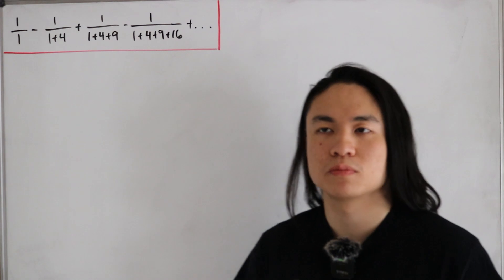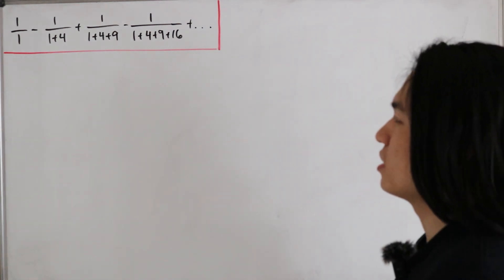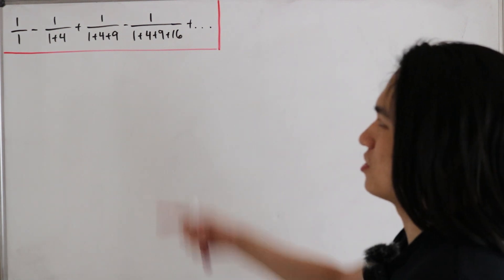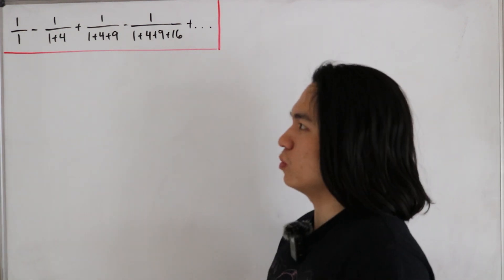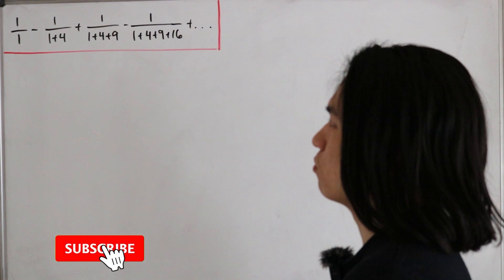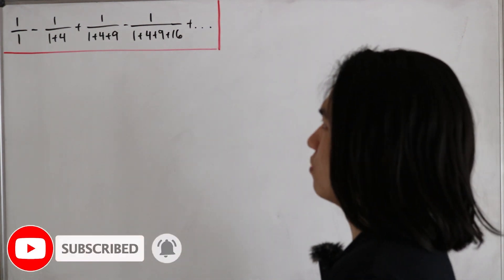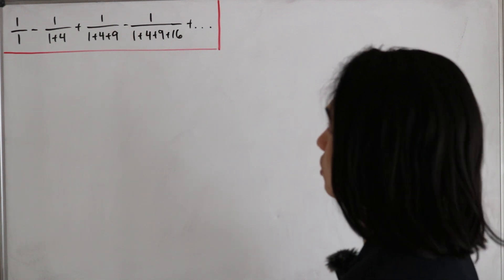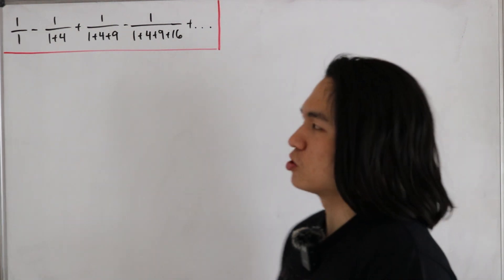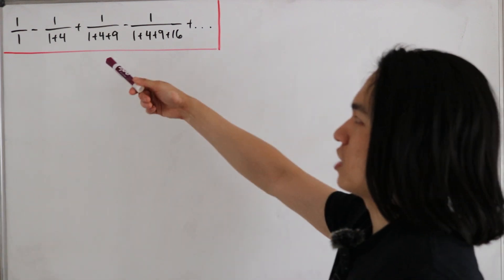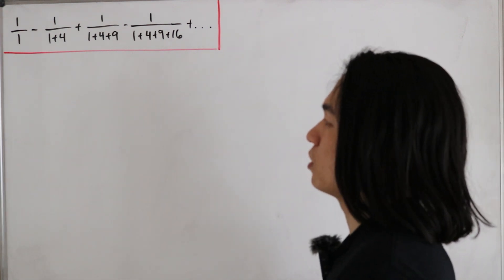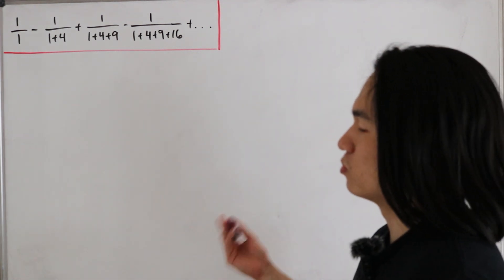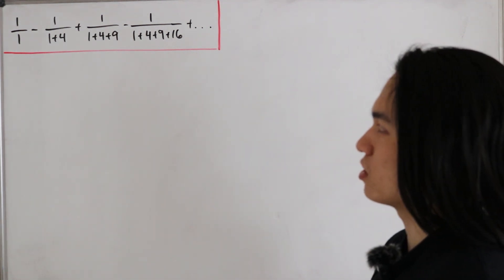Welcome back. Here is an infinite sum we want to calculate. What we're dealing with is: one divided by one, minus one divided by one plus four, plus one divided by one plus four plus nine, minus one divided by one plus four plus nine plus sixteen, and so on. You can probably notice that the denominators are sums of squares.